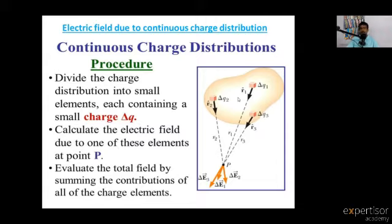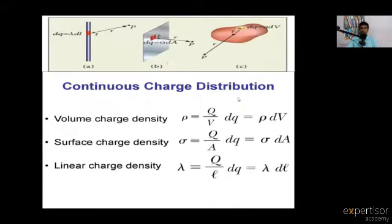That is the concept. Now we have to discuss the shape of the body. There are three different types of diagram: a body can have linear dimensions, or length and breadth, giving three different charge distribution cases.